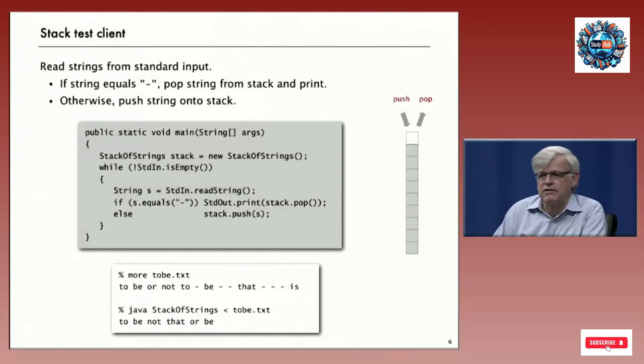In the example down below here, if we have this file called 2B.text, the client will push 'to be or not to' all on the stack. Then when it comes to this hyphen, it'll pop the most recently inserted item, which is 'to' in this case. Then it'll put 'be' on the top of the stack, and then pop the top item on the stack, which is now 'be'. And then pop the item most recently added - 'be' is gone, 'to' is gone, so the next is 'not' and so forth. This is a simple test client that we can use to test our implementations.